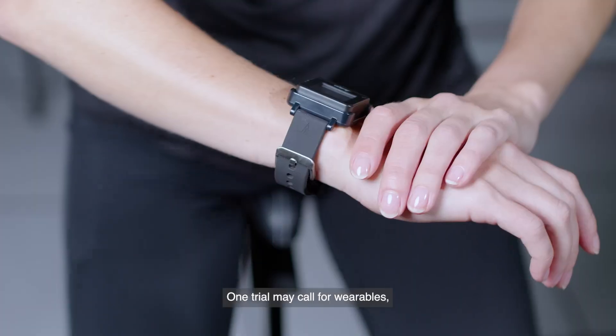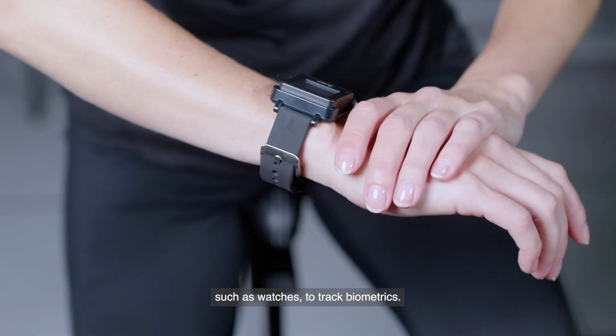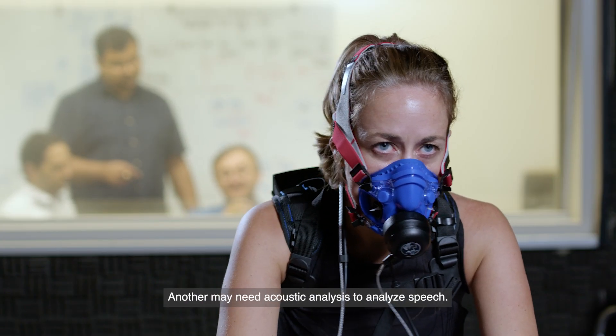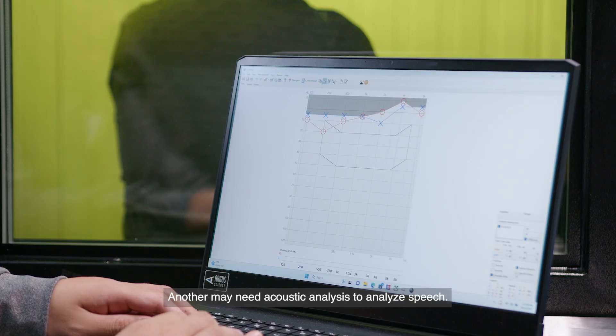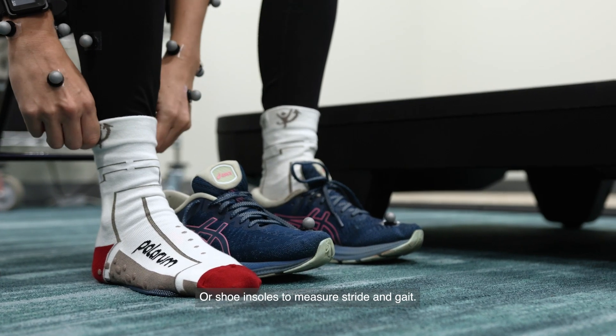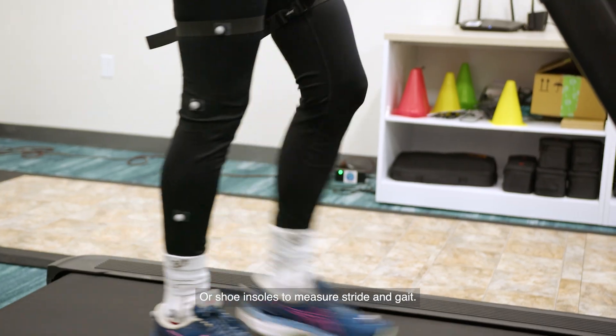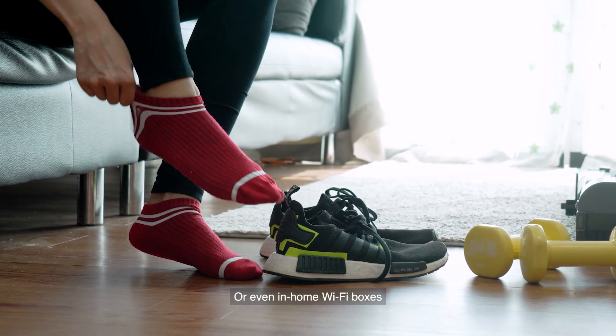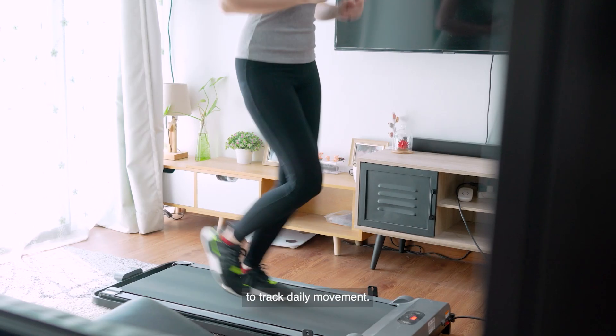One trial may call for wearables such as watches to track biometrics. Another may need acoustic analysis to analyze speech, or shoe insoles to measure stride and gait, or even in-home Wi-Fi boxes to track daily movement.